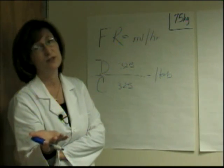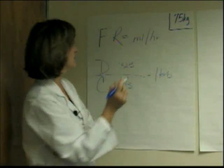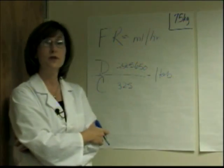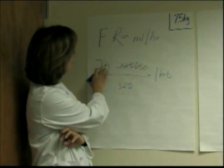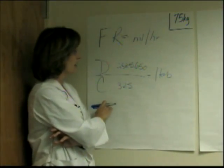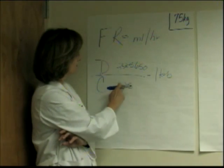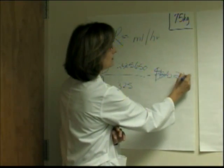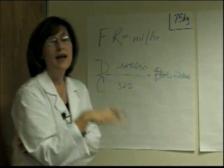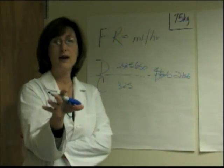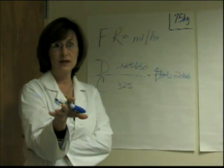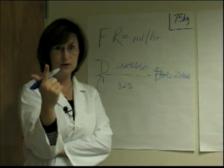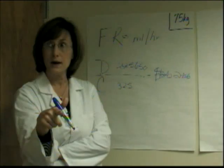But Tylenol is not really ordered at 325 milligrams — it's usually ordered at 650 milligrams. We do the same thing: put dose over concentration. If you divide 325 into 650, it's two tablets. That little maneuver holds for every calculation we'll do today. The two things you always need to know are dose and concentration. Dose always goes on top, and concentration on the bottom.